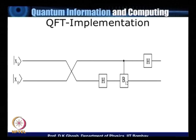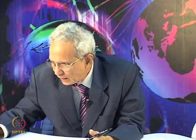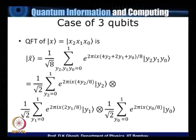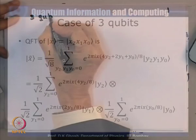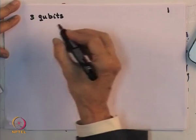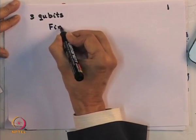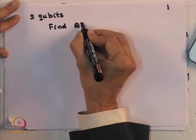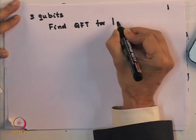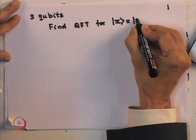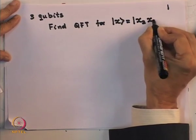We defined the B_jk gate last time, which I will have occasion to talk about again today, and this is the way one implemented QFT for n=2. Now let us look at the situation with respect to n=3. For the 3-qubit case we need to find the QFT for x, which is a shortened notation for writing x2, x1, x0.